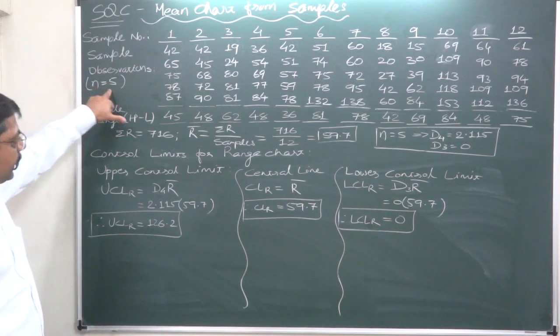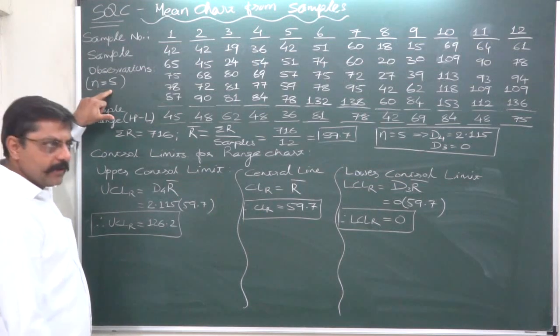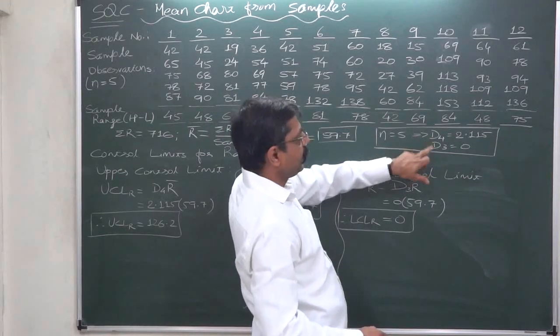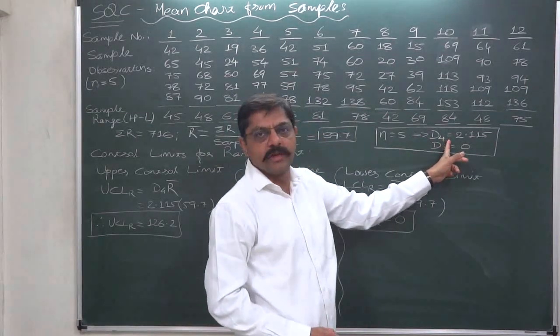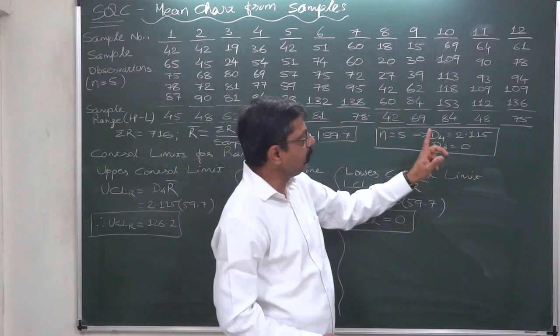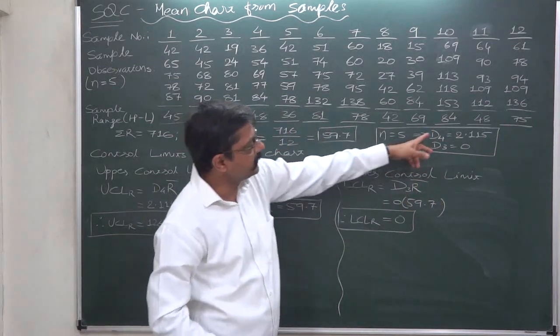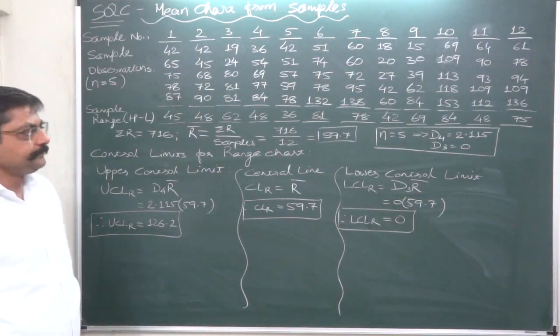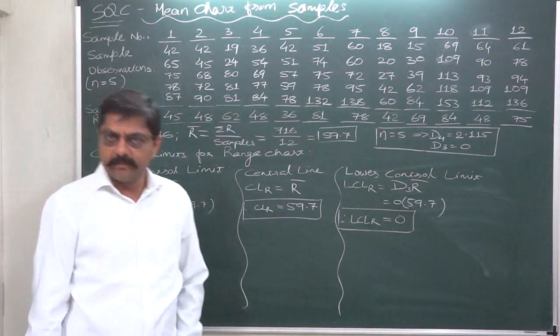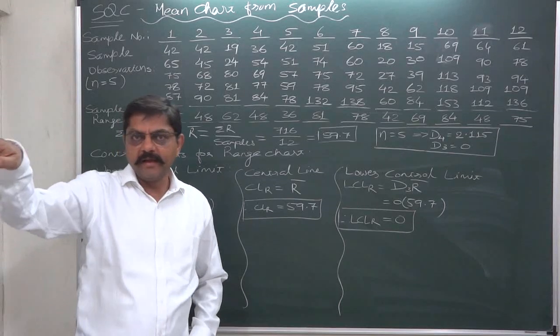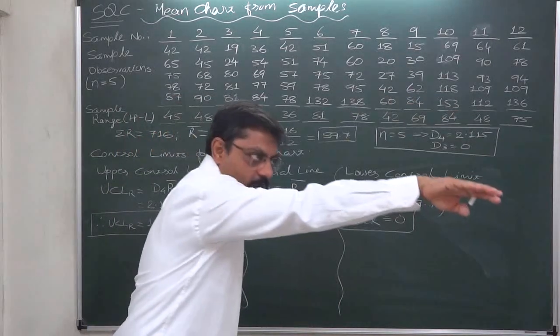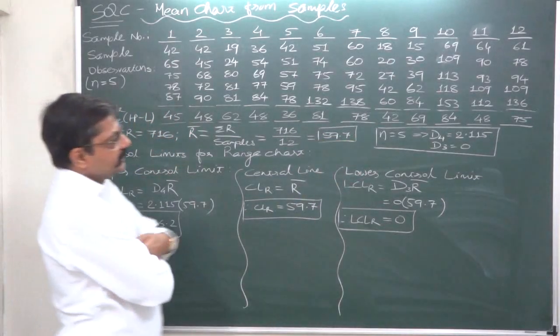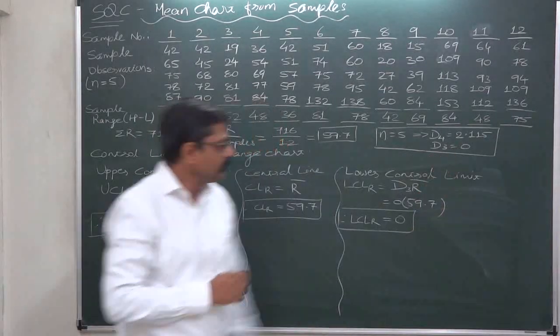Sample size is 5, and on the basis of this sample size we can find out the two constants D4 and D3 from the table. To find out the upper control limit we need D4, and for the lower control limit we need D3. For sample size 5, I have already discussed in my second lecture how to find these values. Take the table, find sample size 5, and go through that row. Since D3 is 0, the LCL will be 0.